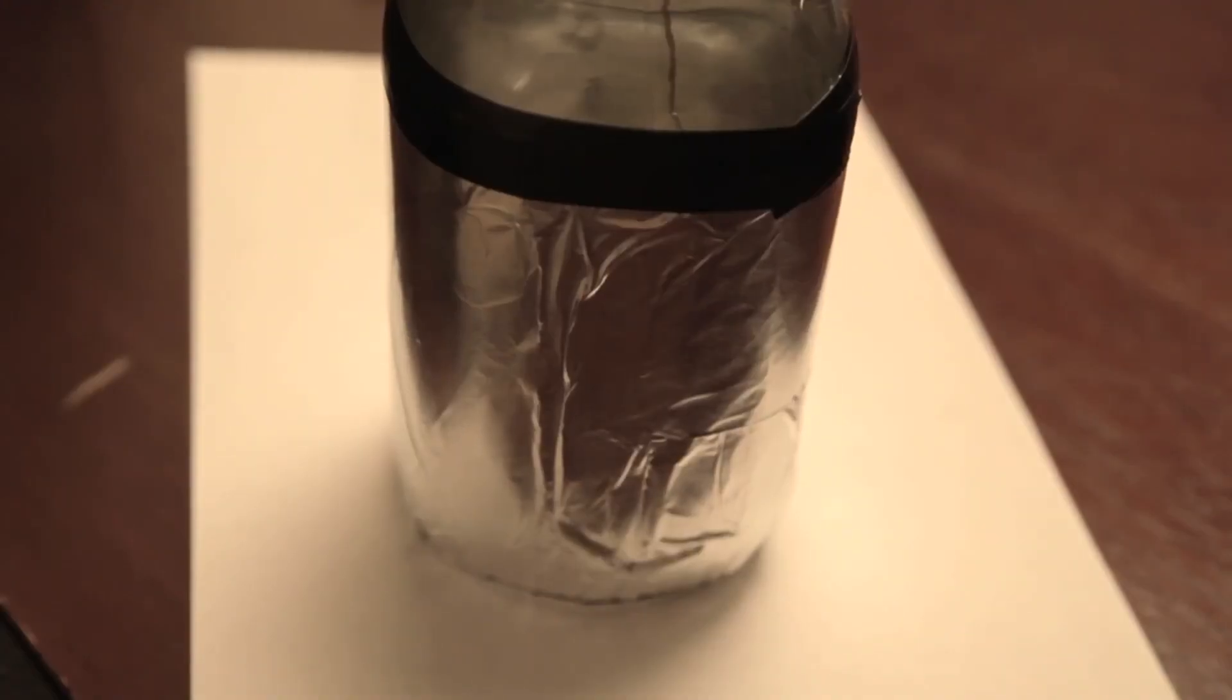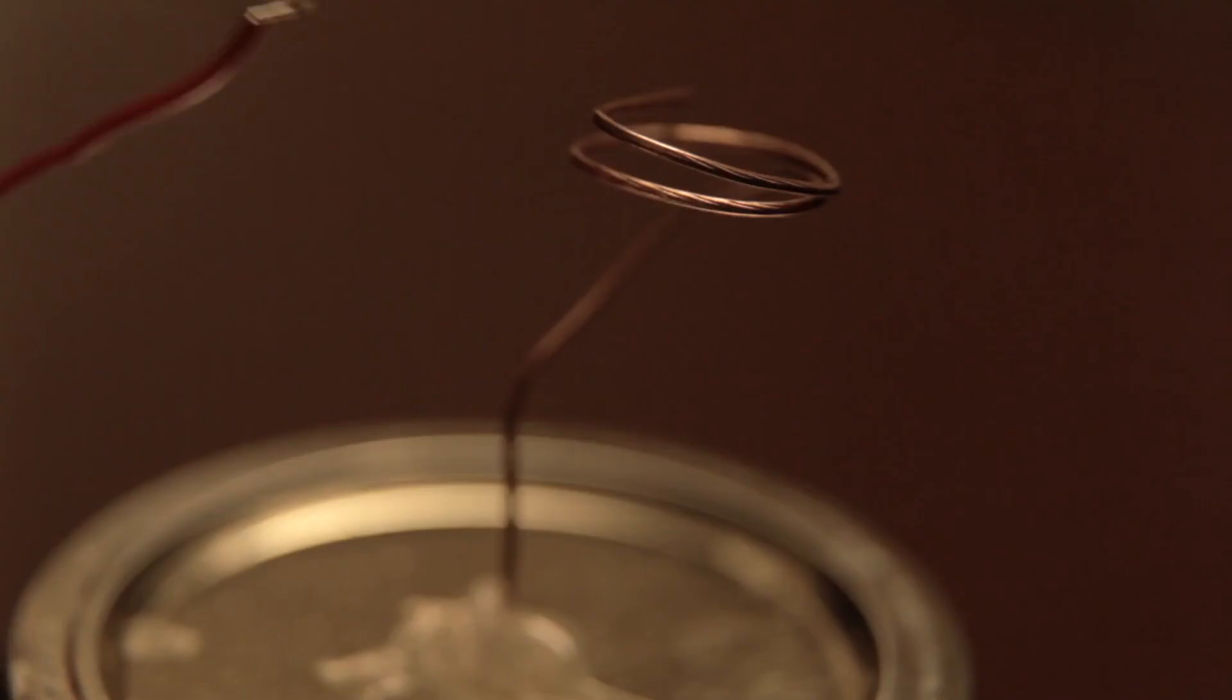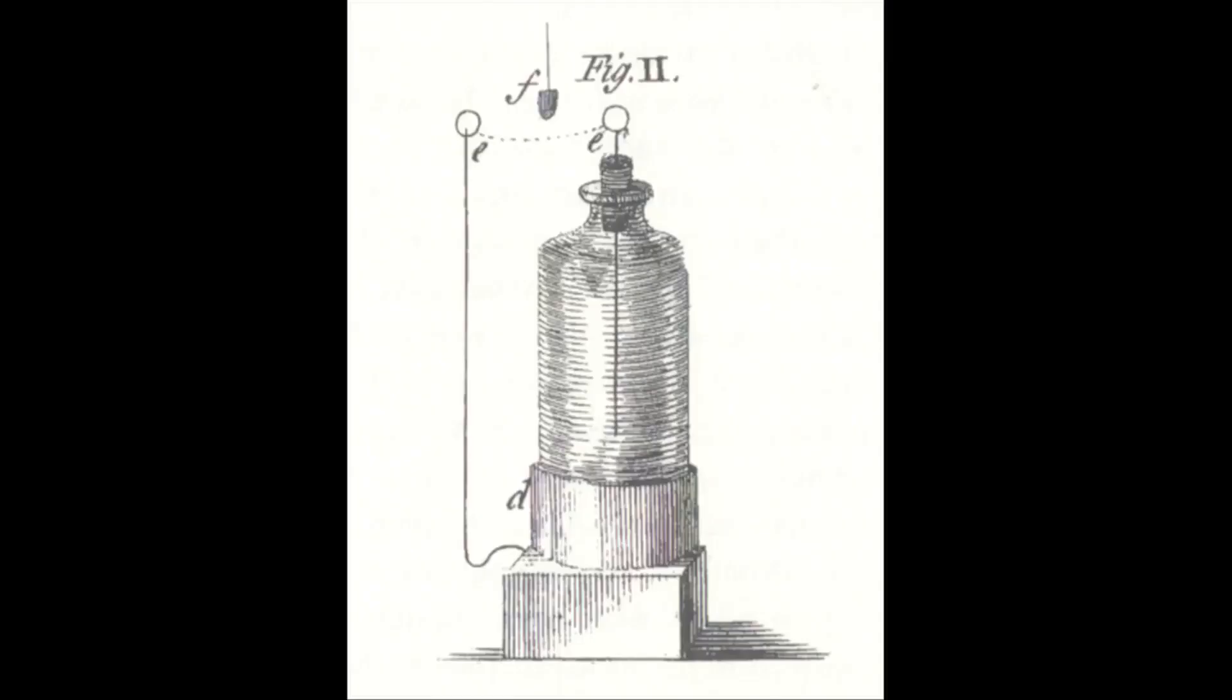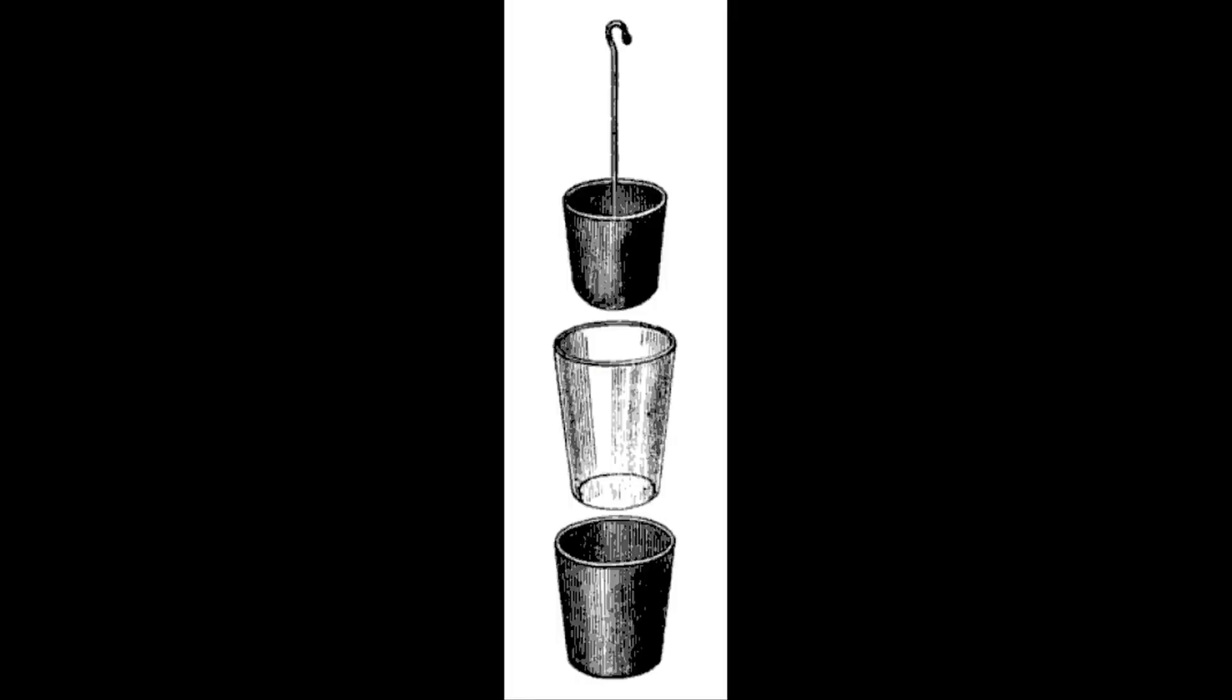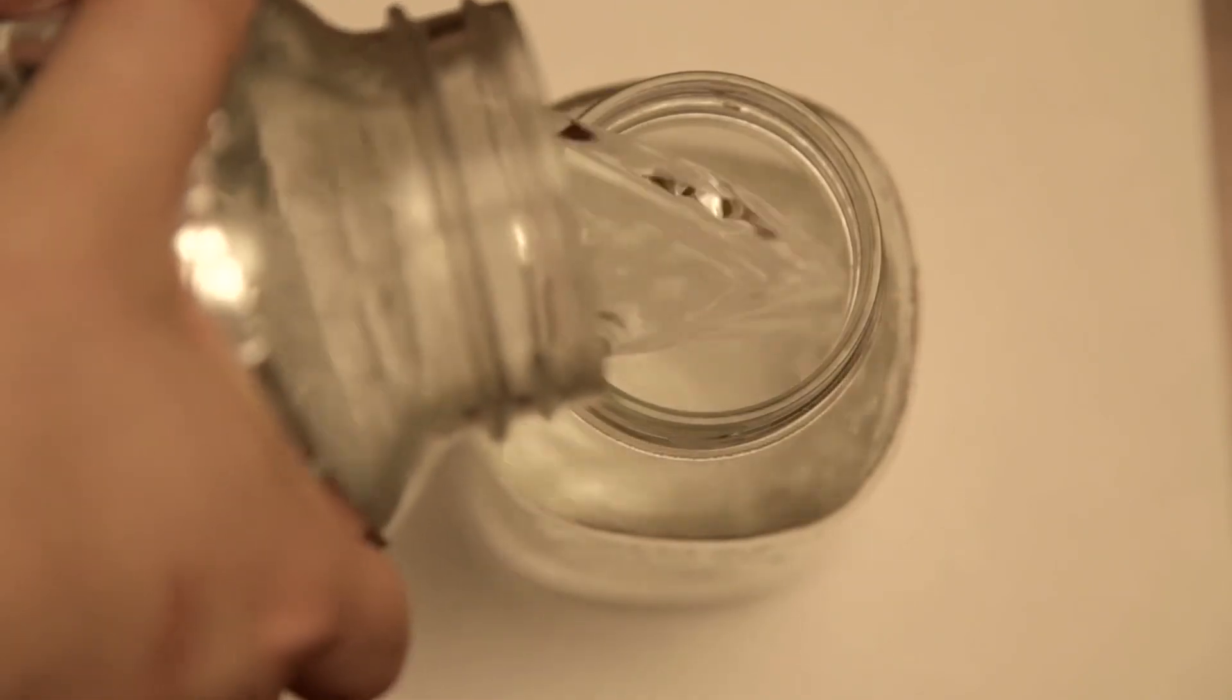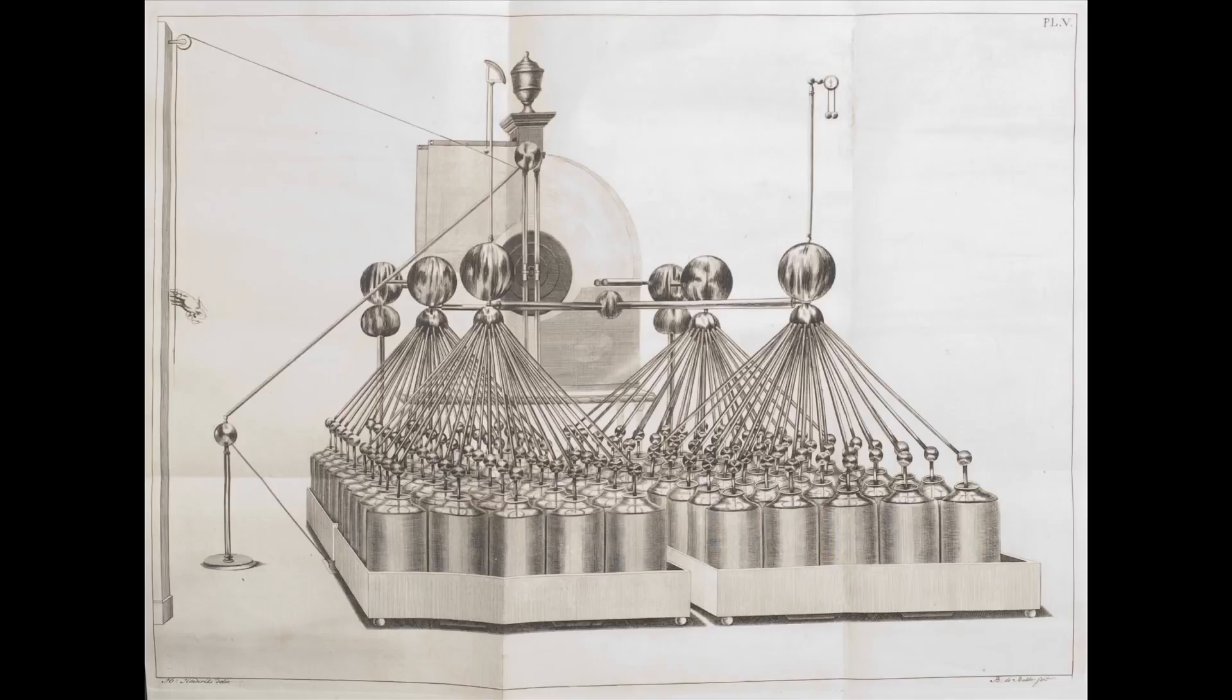And to release the charge, he simply touched the outside conductor to the top probe. A large discharge occurred. Franklin improved the design over time, eventually realizing that the charge was not stored in the water, but the glass. The water was merely a conductive path from the probe to the jar. Today, we would call the Leyden jar a capacitor, or charge-storing device. And when he chained many jars together, he found he could increase the capacity even more and release deadly bolts of electricity.